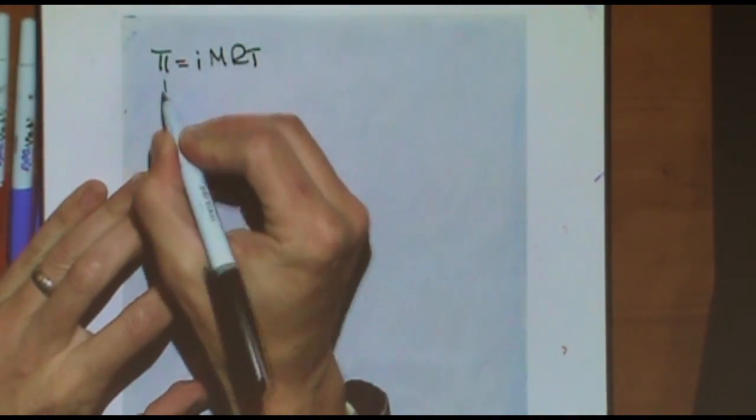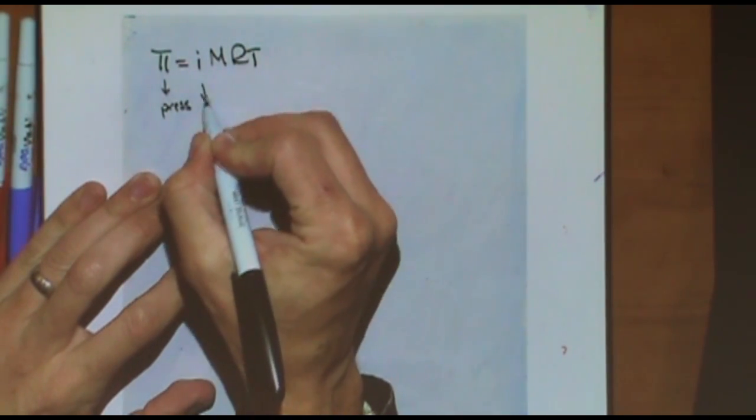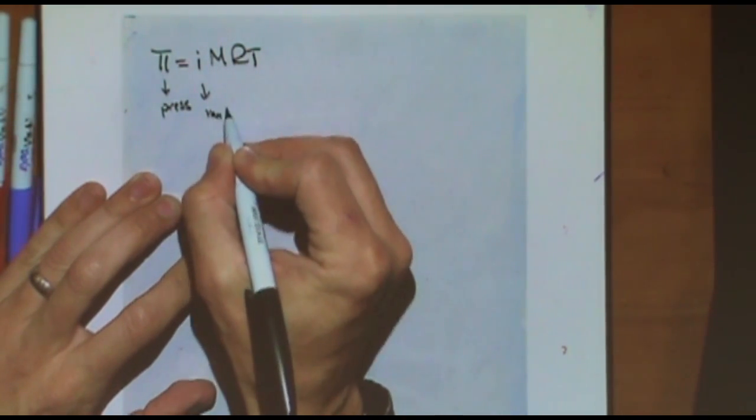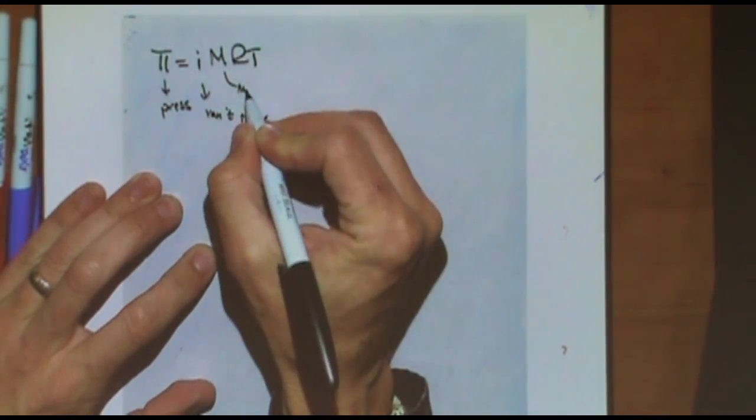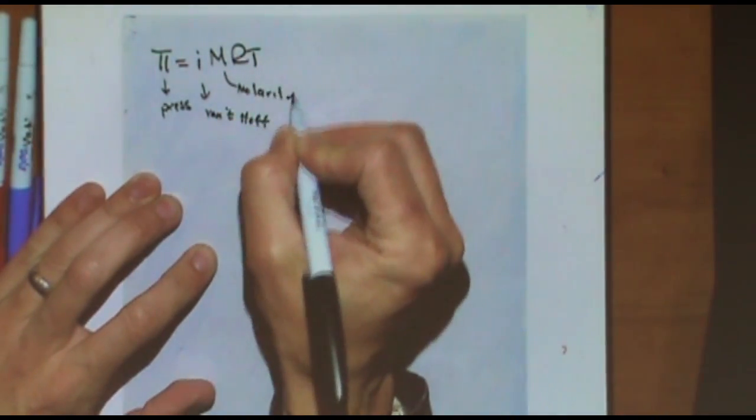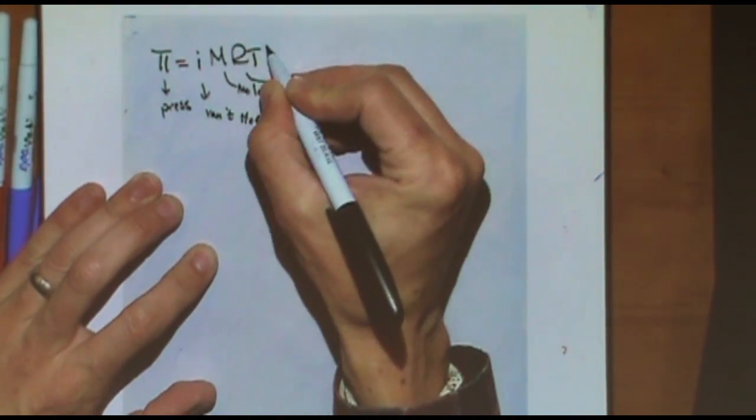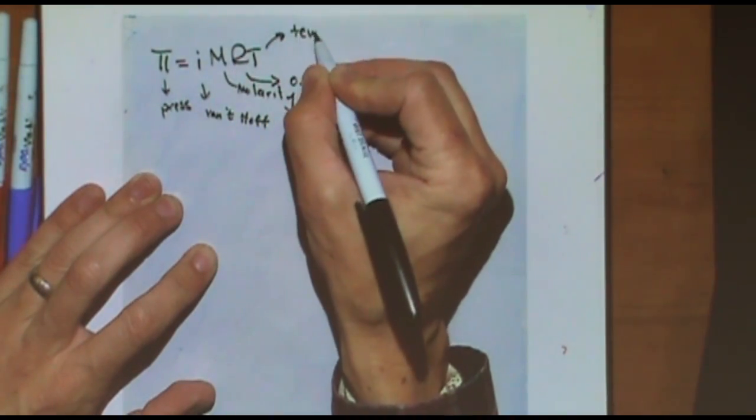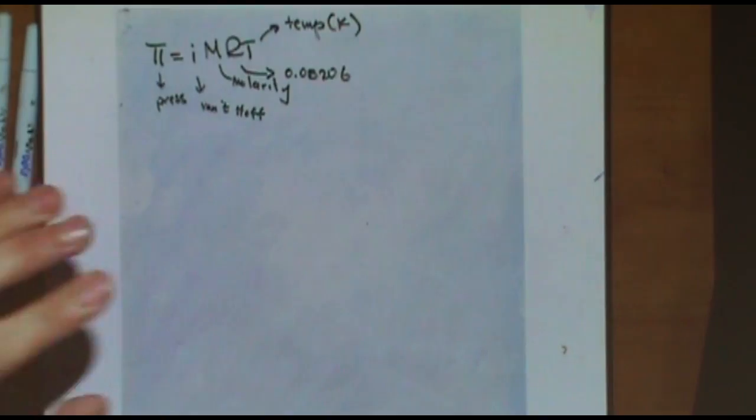First let's define all the terms. Here's the pressure π. This is the Vant Hoff factor i. We've got the molarity M. We've got R, which is 0.08206. And we've got the temperature in Kelvin. So it's basically a plug and chug.